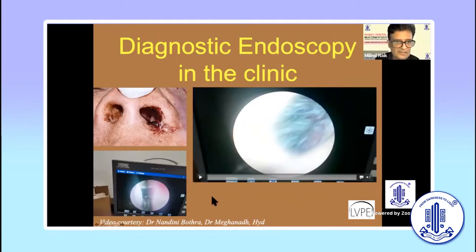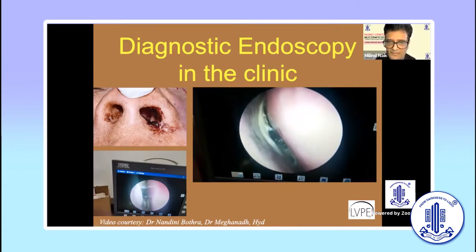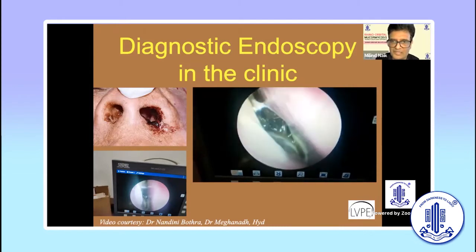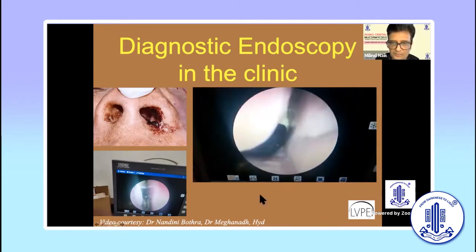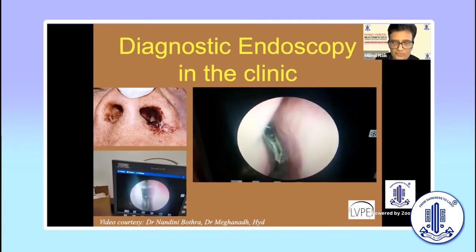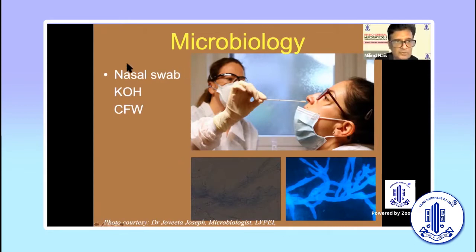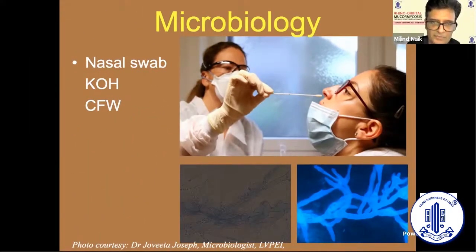Diagnostic endoscopy in the clinic is very essential. Some of you may have to take help from your ENT colleagues, but this is a clinic-based endoscopy. You can see the black or gray escar, which is very classic and diagnostic of mucormycosis — if you see this, you are better off starting antifungals while you do further investigations. The next step is microbiology confirmation, ideally by taking a piece of that escar and sending it to microbiology. We currently do not know the role of a blind nasal swab, but even if blind swabs are able to pick up a few cases, it is still worth it in this deadly situation.